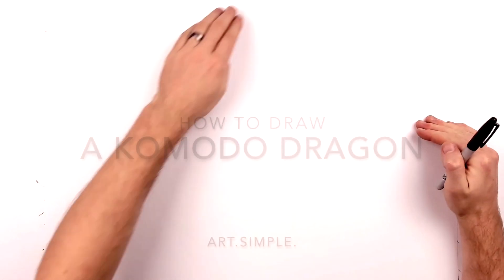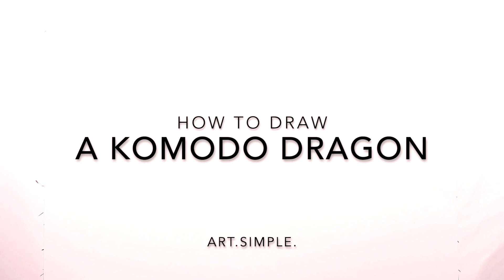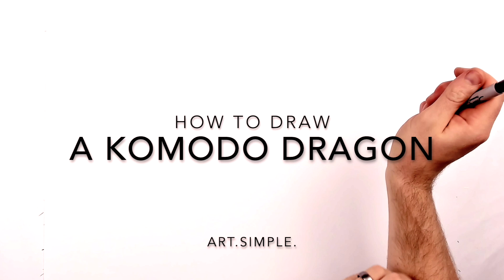What's up everybody, welcome back to another drawing tutorial. Today we have an animal, a Komodo dragon. I'm on landscape paper, use a pencil, an eraser, hit pause if I go too fast.